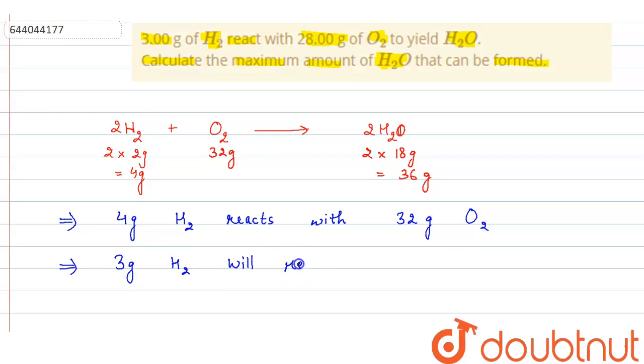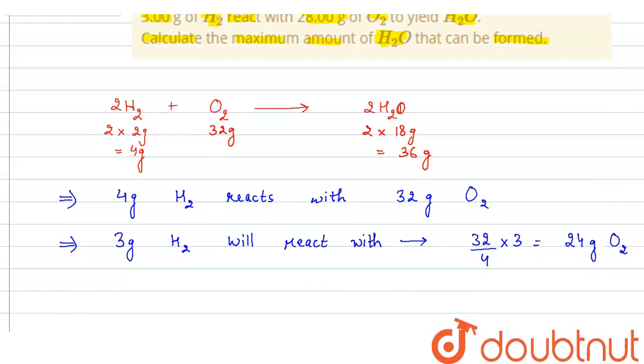So 3 gram H2 will react with less O2. We can say 3 gram H2 will react with 32/4 × 3, that will be equal to 24 gram O2. So 3 gram H2 react with 24 gram O2.